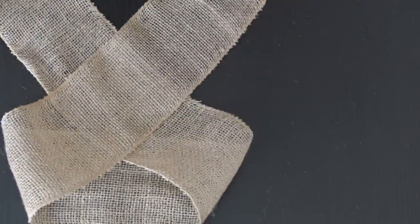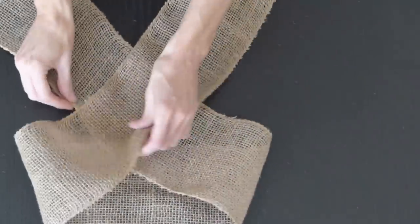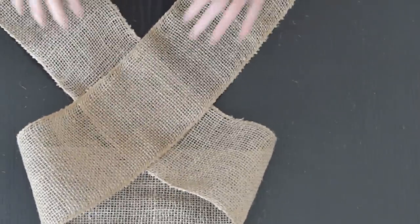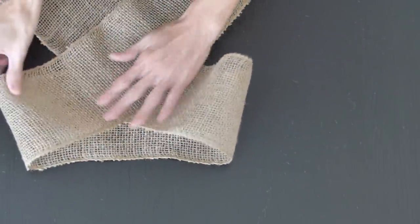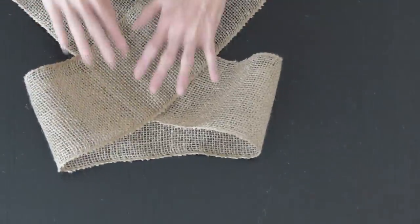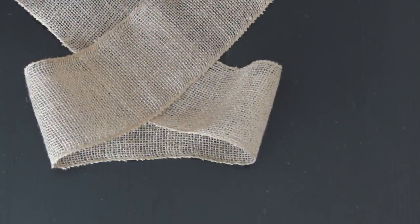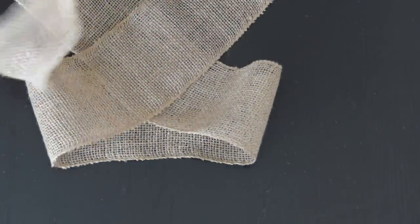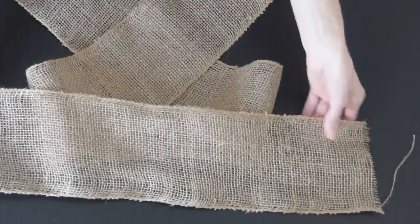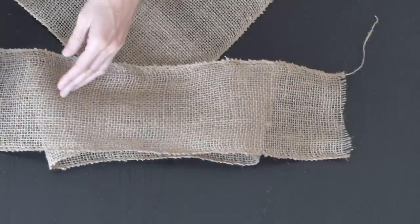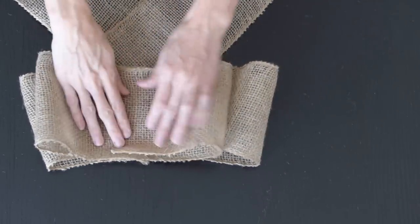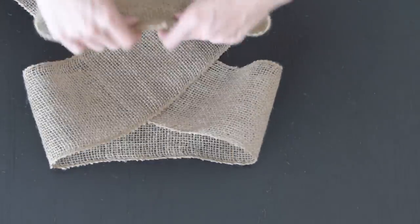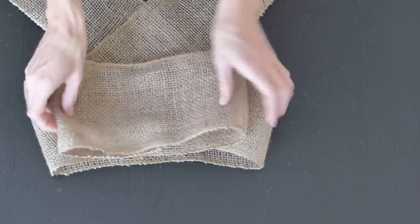Once you get it folded like I have it, grab your 24-inch piece of ribbon and fold that as I'm doing here. Turn it over and place it on top of the 60-inch piece.